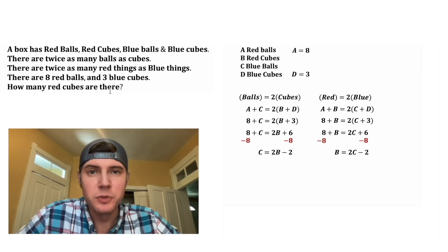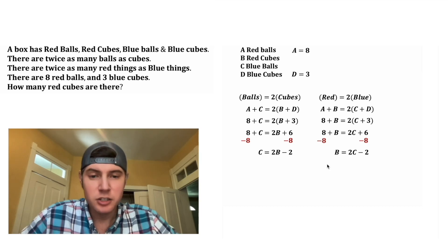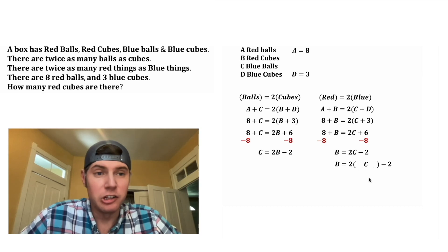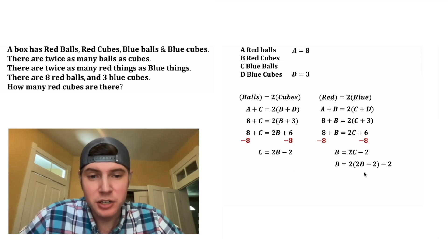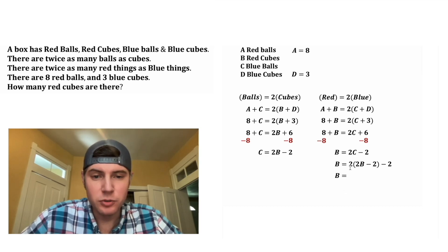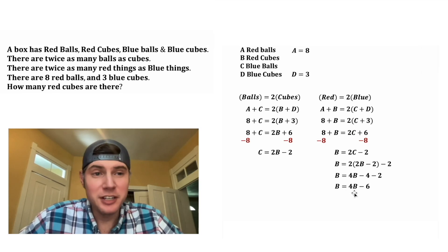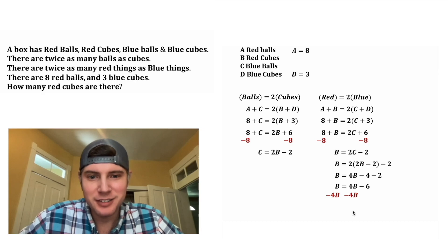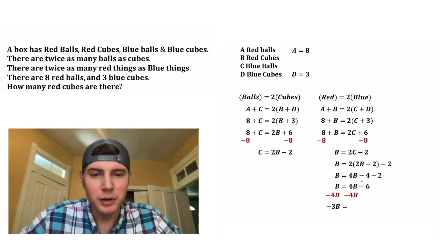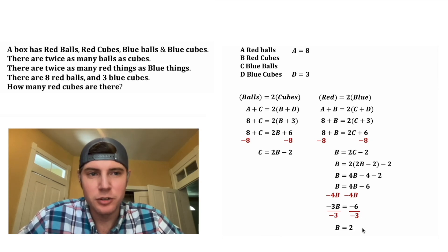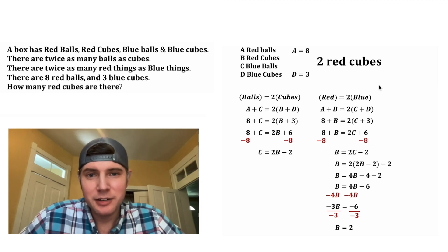The question is asking how many red cubes are there — we want to solve for B. Let's substitute C equals 2B minus two into the equation B equals 2C minus two. Distributing: two times 2B is 4B, and two times negative two is negative four, so B equals 4B minus six. Subtracting 4B from both sides gives negative 3B equals negative six. Dividing both sides by negative three: B equals two. B was our number of red cubes, so we have two red cubes.